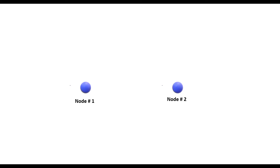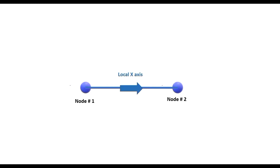If you have two nodes numbered 1 and 2, and a member connects from node 1 to node 2 — where node 1 is the start node and node 2 is the end node — then the local x-axis would be pointing from the start node to the end node. For more on the concept of start and end nodes, refer to the video linked in the top right corner of your screen.